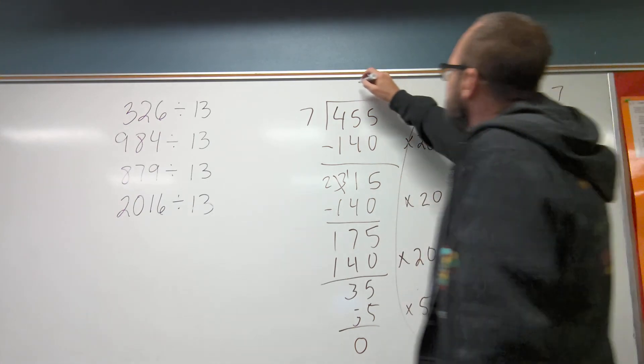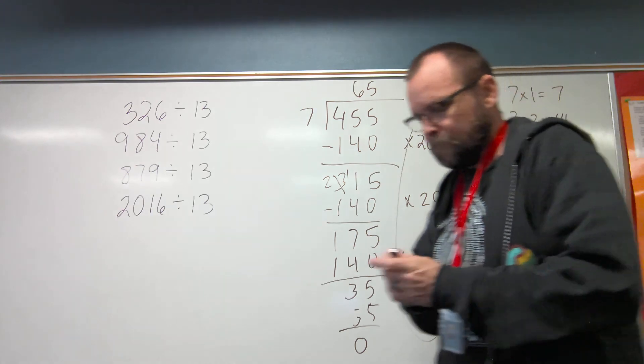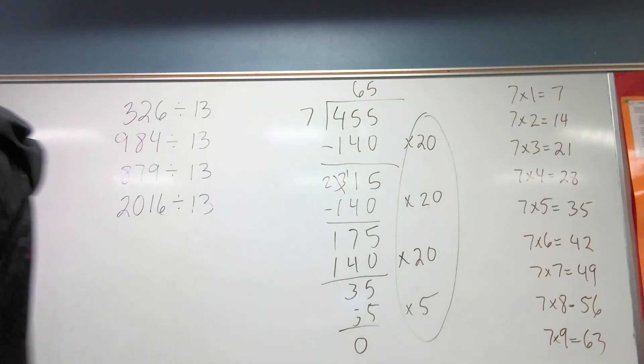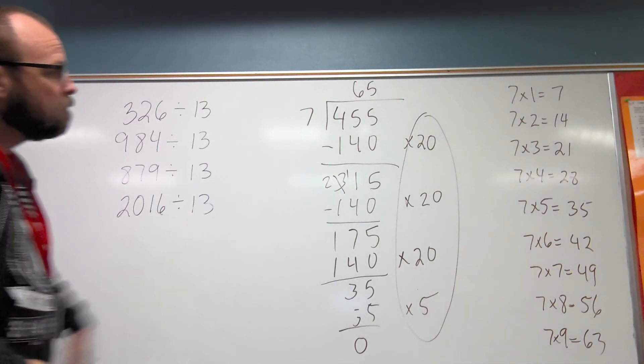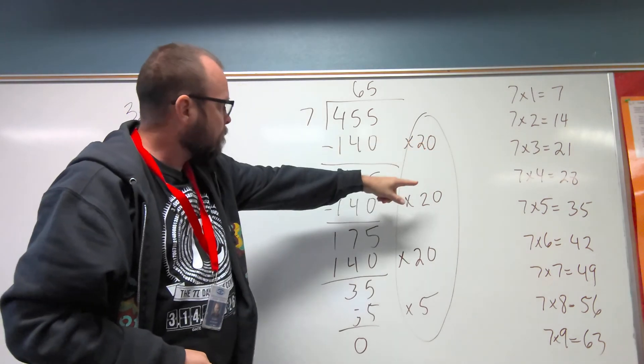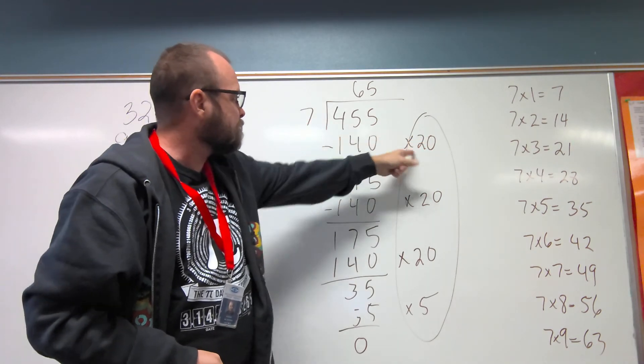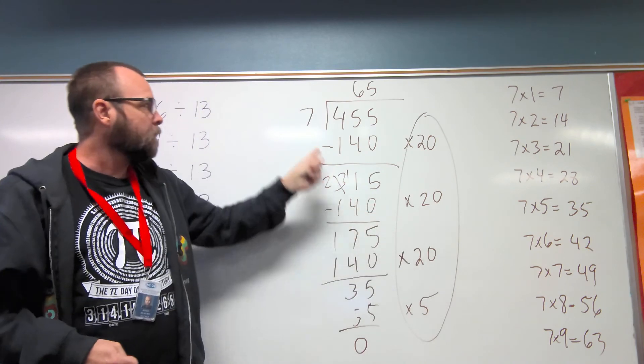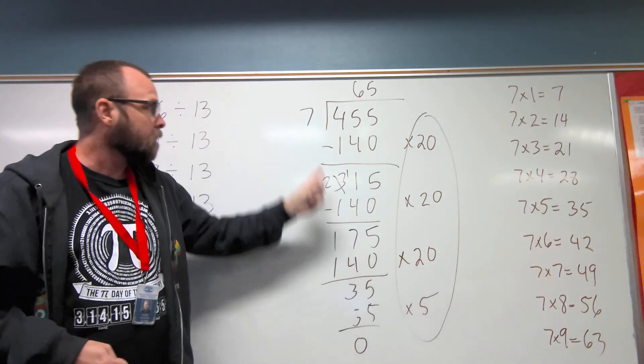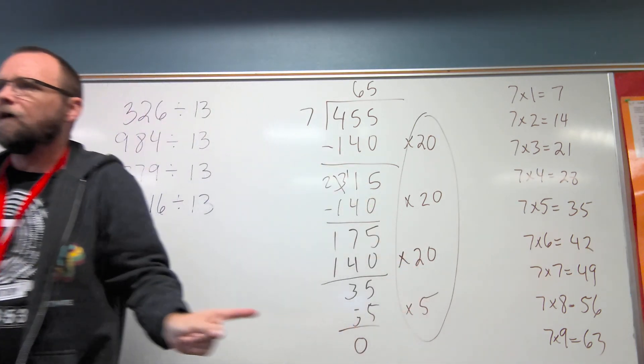I need to be able to add, is it 175 times 20? No, it's 7 times 20 is 140. 7 times 20 is 140. 7 times 20 is 140. 7 times 5 is 35.